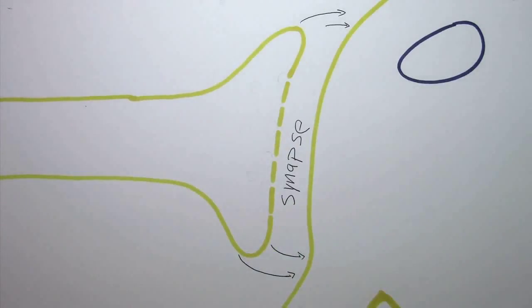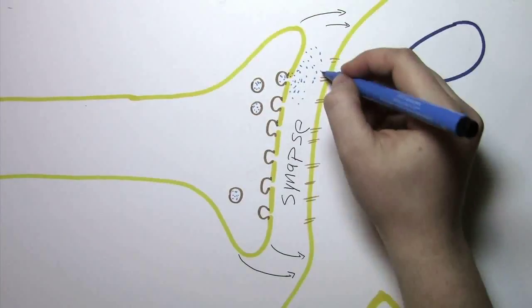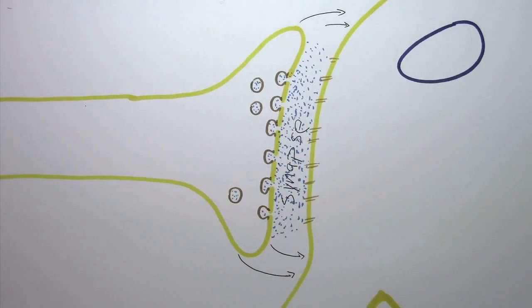Here's the tricky part. When the action potential reaches the end of the nerve, chemicals called neurotransmitters are released across that tiny gap, so that a new action potential is created in the next neuron, and the signal can pass to the spinal cord and be fast-tracked to the brain.